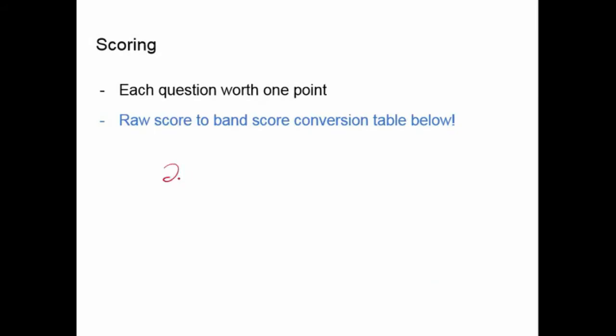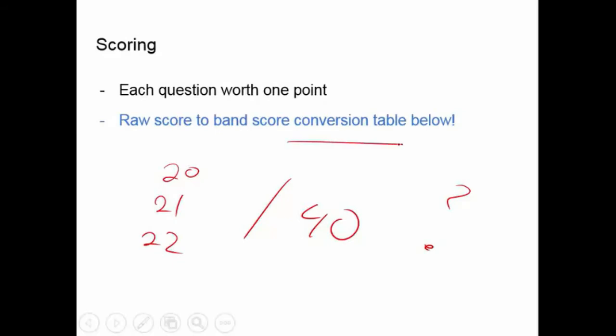A 30 out of 40 will always have the same score. The academic and general training tables are a little different, so make sure you're looking at the right table to know what score you're targeting for the exam.